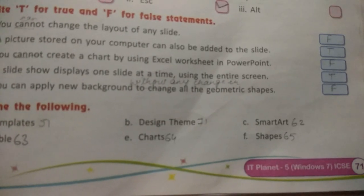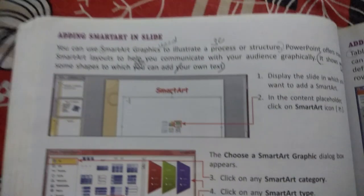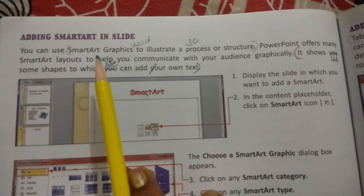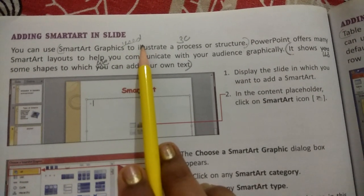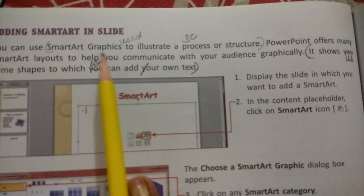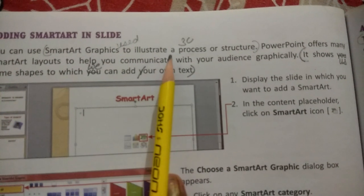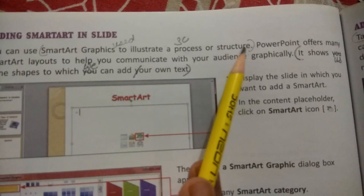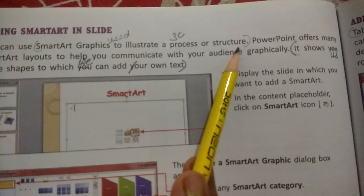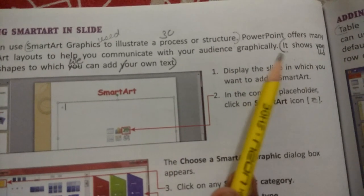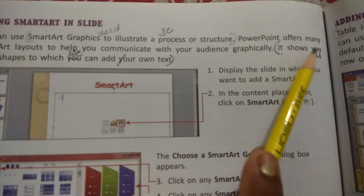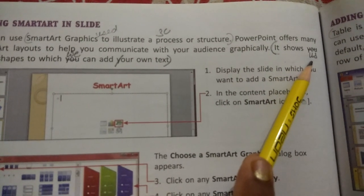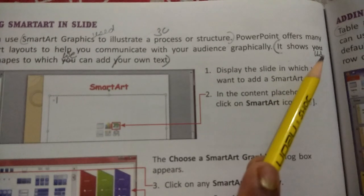Now for the third answer, take out page number 62. Start from the first line: SmartArt graphics. After graphics write used. SmartArt graphics used to illustrate a process or structure. After this, start from here: it shows, cut you and write on us, it shows us some shapes to which, cut you and write on we can add our own text.